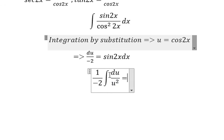The integral of du over u squared gives us negative 1 over u, so we get 1 over 2u.